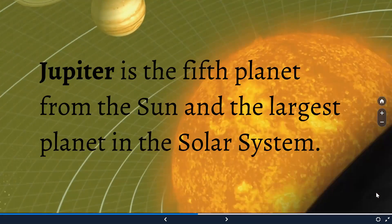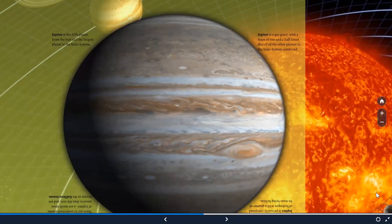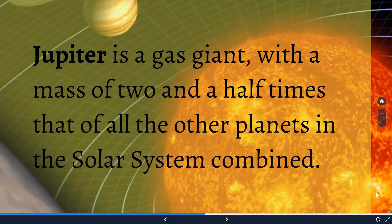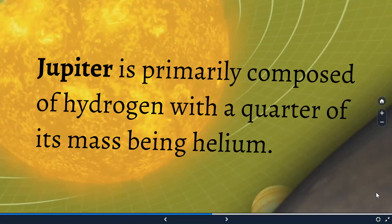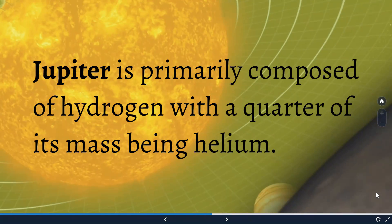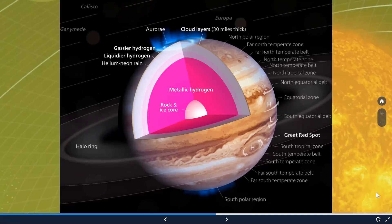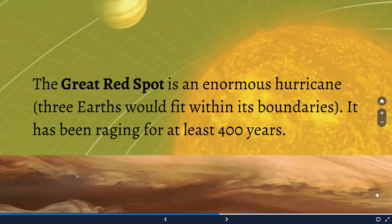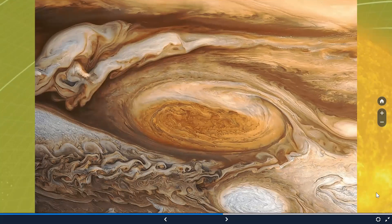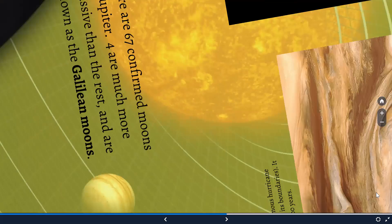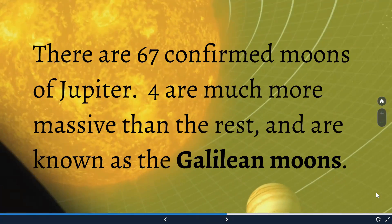Going to the fifth planet, Jupiter — the largest planet in the solar system. It is a gas giant, unlike the first four terrestrial planets, with a mass of two and a half times that of all the other planets in the solar system combined. Jupiter is primarily composed of hydrogen, and a quarter part of it is made up of helium. The great red spot is an enormous hurricane raging for at least 400 years, so big it could accommodate three Earths inside it. Jupiter has 67 moons, of which four are much more massive and are called the Galilean moons.